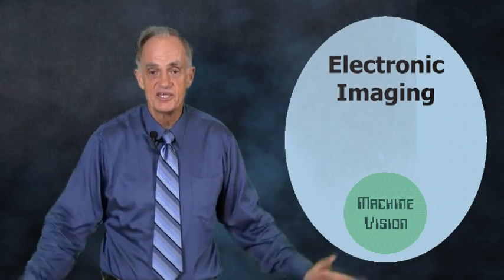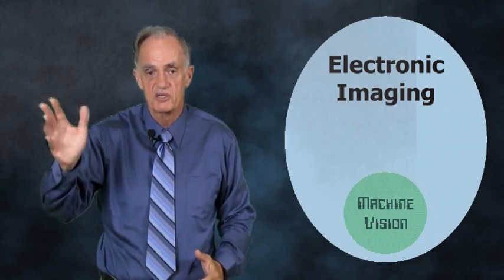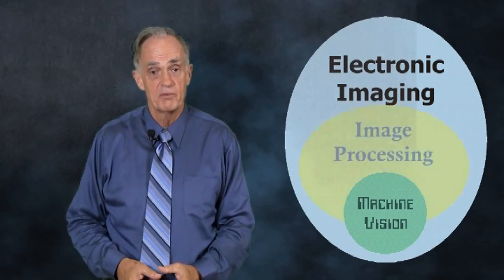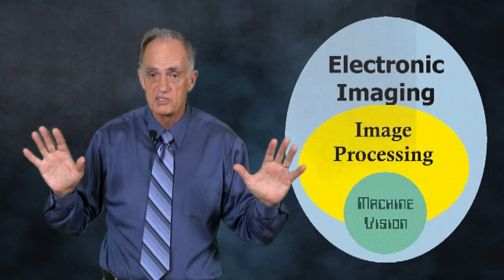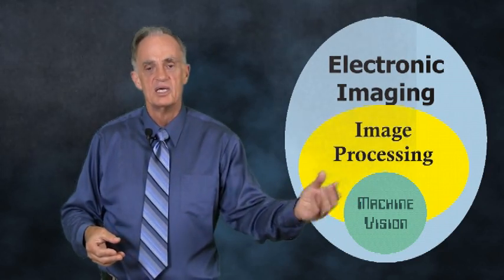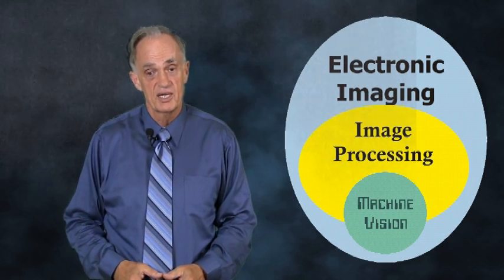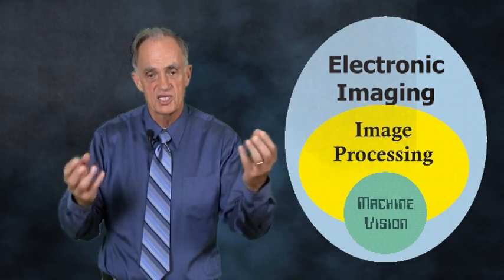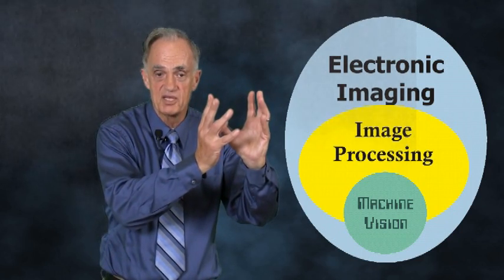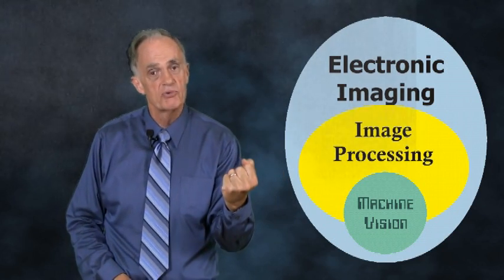We saw earlier that machine vision is a subset of electronic imaging, and we have discussed many other areas that are also subsets of electronic imaging. Most of these technologies have some amount of image processing. However, since image processing is not directly involved with image sensing, transmission, storage, or display, it covers only a portion of electronic imaging. Like most activities in electronic imaging, machine vision draws extensively on image processing.